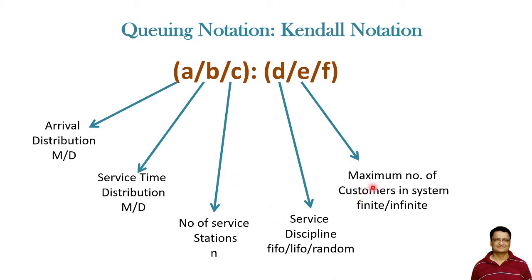Then E is the maximum number of customers in a system, that is how many customers are allowed in the system, whether there is any limit or no limit. And last is F, the size of the source population, whether it is limited or unlimited.